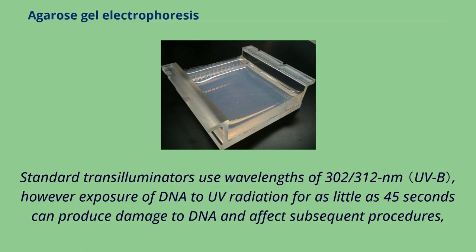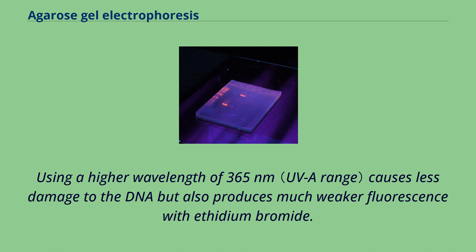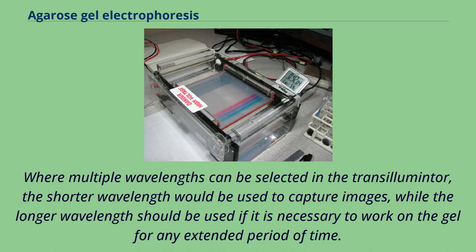UV damage can reduce the efficiency of transformation, in vitro transcription, and PCR. Exposure of the DNA to UV radiation should therefore be limited. Using a higher wavelength of 365 nm causes less damage to the DNA but also produces much weaker fluorescence with ethidium bromide. Where multiple wavelengths can be selected, the shorter wavelength should be used to capture images while the longer wavelength should be used if it is necessary to work on the gel for any extended period of time.